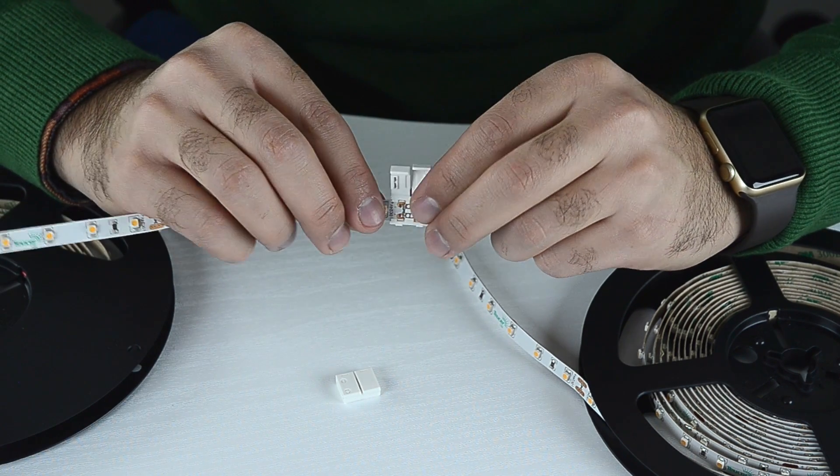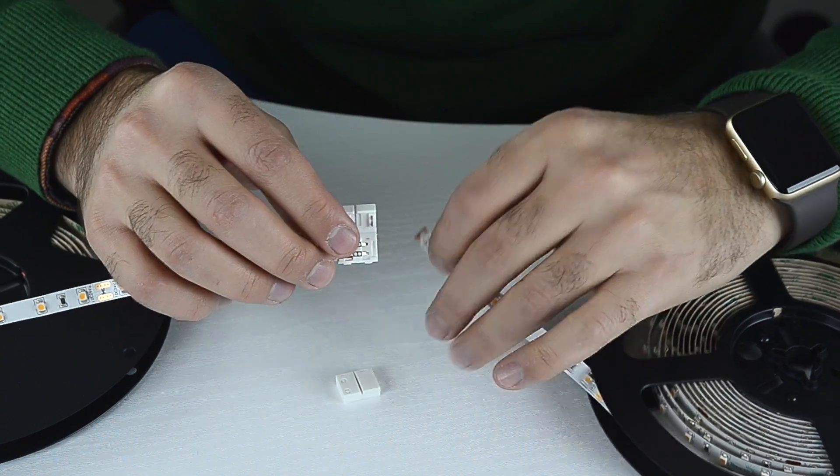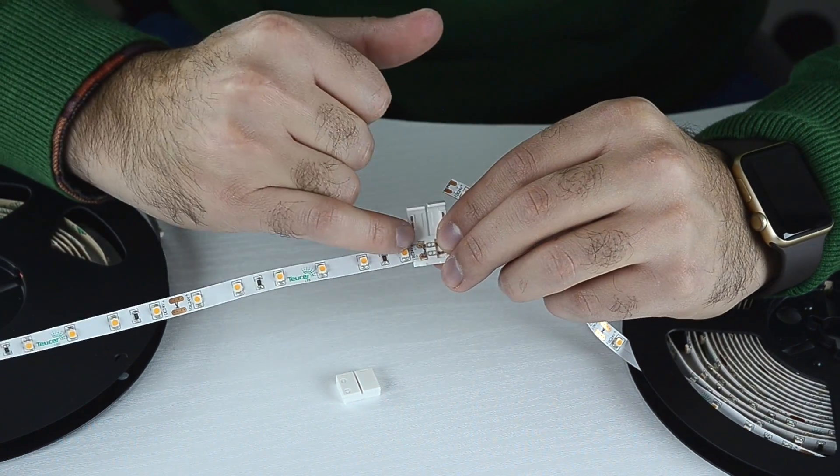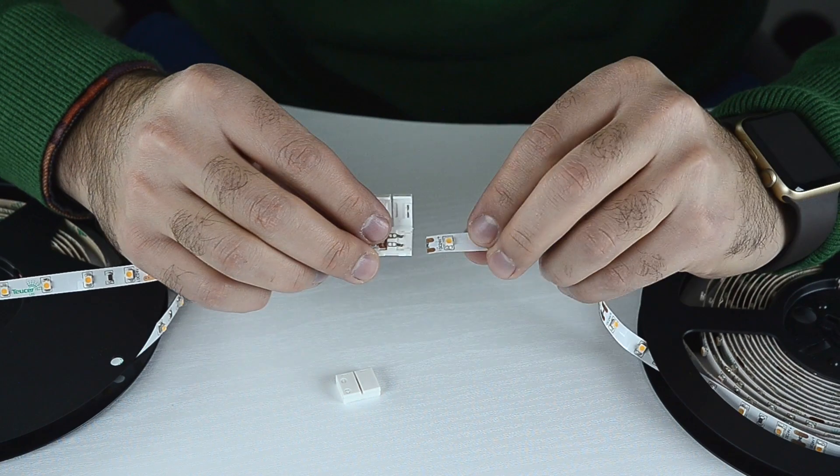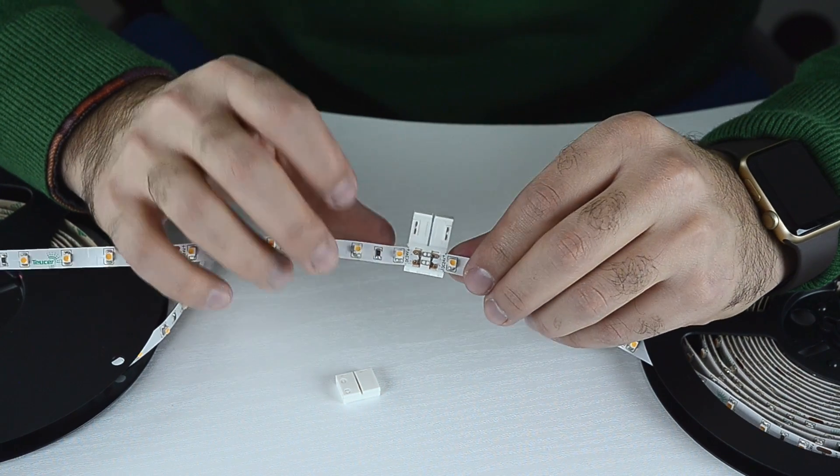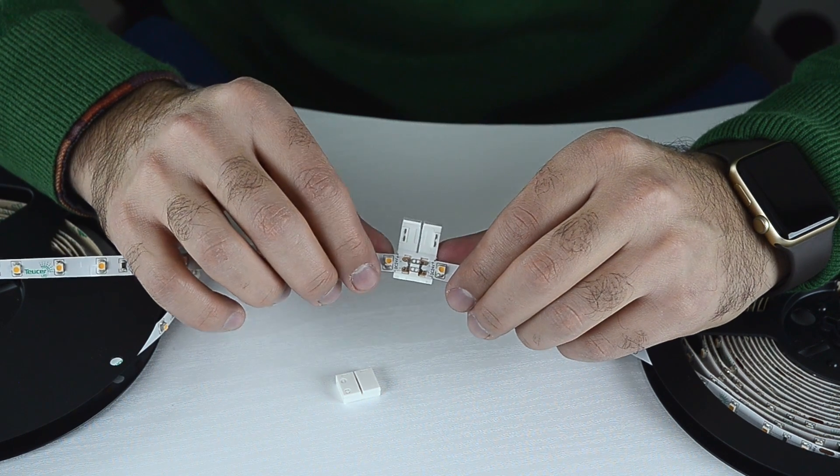Gently insert the strip into the connector. Make sure the strip goes below the ridges on either side. Do not use any tools or try to force the strip into the connector.